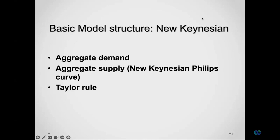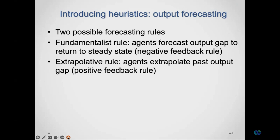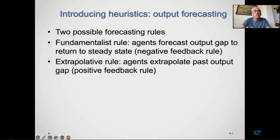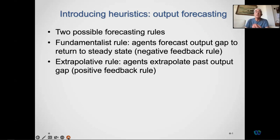That's the conventional basic structure found in most macroeconomic models. The originality of this paper is to introduce behavioral assumptions about how agents make their forecasts. Instead of assuming rational expectations, which agents cannot easily achieve due to cognitive limitations, they use heuristics — simple rules. We reduce the model to its most basic form, assuming just two rules: a fundamentalist rule, where agents forecast the output gap to return to steady state in the next period, and an extrapolative rule.